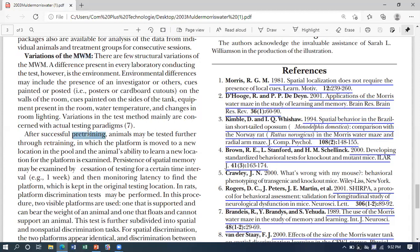After successfully performing pre-training, we can do retraining. In retraining, we shift the platform to a new place in the pool and check how fast the animal can locate the new position. Through this we examine the persistence of the spatial memory.